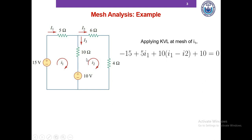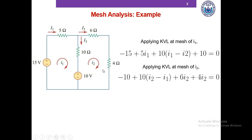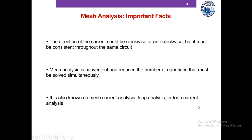Please pause this video and try to write the KVL for mesh I2, and then we'll match our answers. Going clockwise in mesh 2: minus 10, then the clockwise current through the ten-ohm resistor — I2 goes from bottom to top and I1 goes from top to bottom, so the total clockwise current here is I2 minus I1, giving us 10(I2 minus I1). In the six-ohm resistor only I2 flows, and in the four-ohm resistor only I2 flows — so 6I2 plus 4I2 equals zero. We have two unknowns I1 and I2 and two equations, which we solve to obtain the currents.